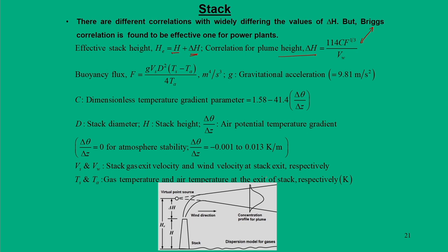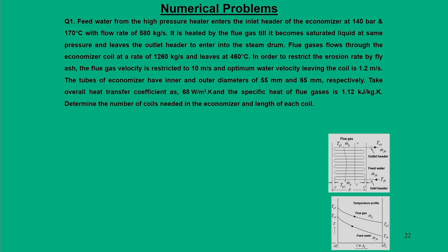To analyze delta-h we use analytical methods that account for the vertical momentum of the gas from the stack exit velocity and buoyancy due to density difference of stack gas and atmospheric air. The plume height is modeled through Briggs' correlation: delta-h = 114 × c × f^(1/3) / v_w, where f is the buoyancy flux — f = g × v_s × d² × (T_s − T_a) / (4 × T_a) — and c is a non-dimensional temperature gradient term: c = 1.58 − 41.4 × (delta-theta / delta-z), the air potential temperature gradient ranging from −0.001 to 0.013. When there is atmospheric stability (no turbulence), delta-theta/delta-z = 0.